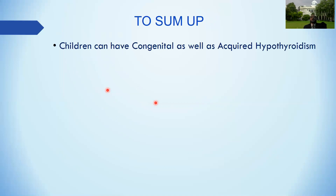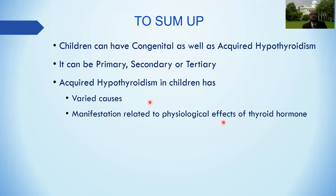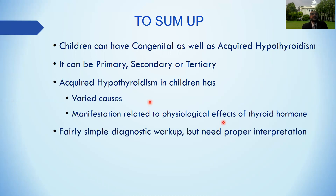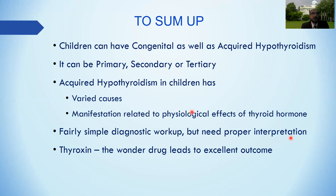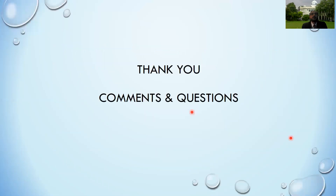Prognosis: untreated cases lead to short stature, puberty problems, psychosocial issues, and precocious puberty. With treatment, the outcome is excellent; however, late diagnosis has substantial impact on cognition and behavior. In summary, children can have congenital or acquired hypothyroidism at the level of the thyroid, pituitary, or hypothalamus. Causes are varied, manifestations relate to the physiological effects of thyroid hormone, diagnosis requires careful interpretation of T4 and TSH relationship, and thyroxine - the wonder drug - leads to favorable prognosis.